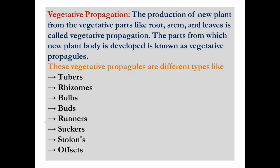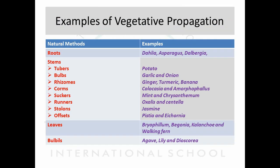Now we'll go through a table of examples of vegetative propagation. Whatever examples are given here are considered as natural methods. In the first section, roots act as vegetative propagules — roots help to develop new plant bodies. Examples include Dahlia, Asparagus, and Dalbergia. These are examples of plants in which new plants are developed from roots.